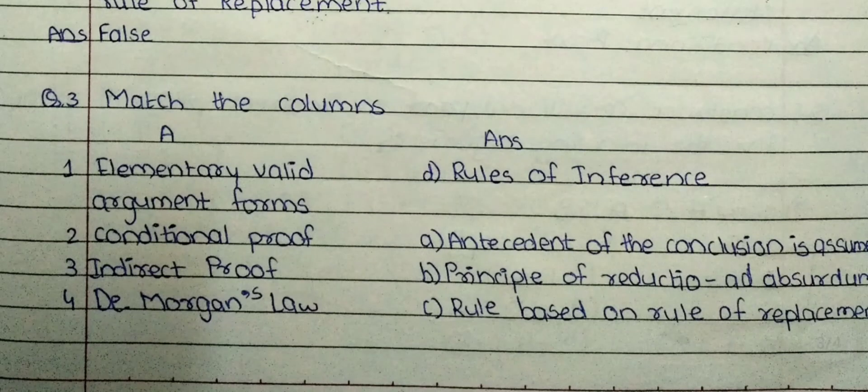Question number 3. Match the columns. First: exclamatory valid argument forms — the answer is rules of inference. Second: conditional proof — the answer is antecedent of the conclusion is assumed. Third: indirect proof — the answer is principle of reductio ad absurdum. Fourth: De Morgan's law — the answer is rule based on rule of replacement.